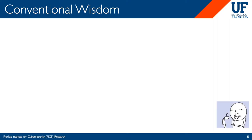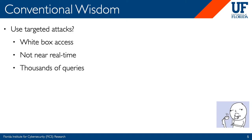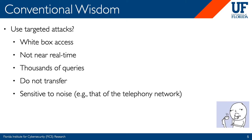Some might ask why we can't just use targeted attacks instead. Targeted attacks have severe limitations: they often require white box access, which an attacker might not have in the real world; they are not real-time and in fact very slow, requiring thousands of queries to the target system; the samples they produce do not transfer to different models; and these attack samples are very sensitive to noise and won't operate in lossy environments such as that of the telephony network.